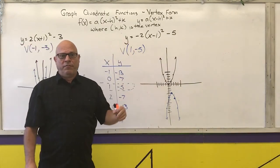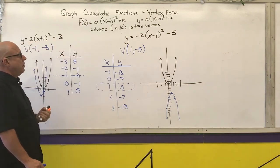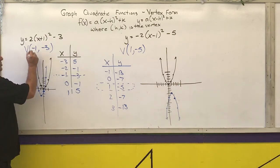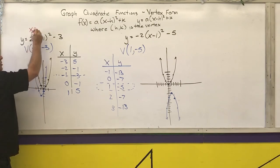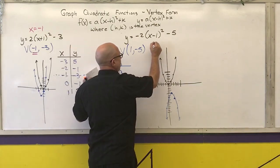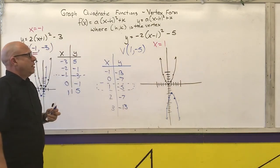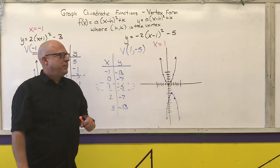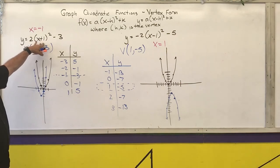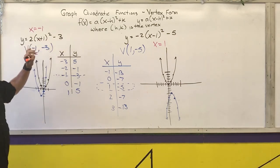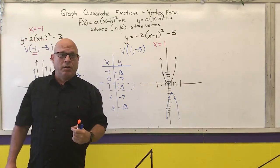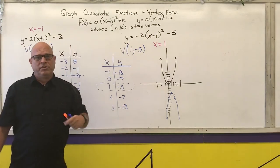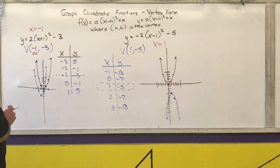That's how you graph quadratics in vertex form — personally it's the easiest form to graph from. The equation for the line of symmetry is just x equals whatever the x-coordinate of your vertex is. So for the last example, the equation of the line of symmetry is x equals 1. If you've watched the video on solving by taking square roots, those problems are in vertex form, and solving gives you the x-intercepts.